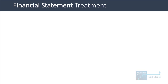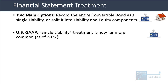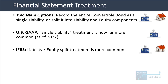Let's now go to the financial statement treatment and accounting. The two main options with convertible bonds are to record the bond as a single liability, or to split it into liability and equity components on the statements. Under US GAAP, the single liability treatment is far more common as of 2022. It has varied in the past and sometimes been more like a 50-50 mix, but as of right now the single liability treatment is more common because of accounting rule changes. Under IFRS, for non-US companies, the liability and equity split treatment is more common.